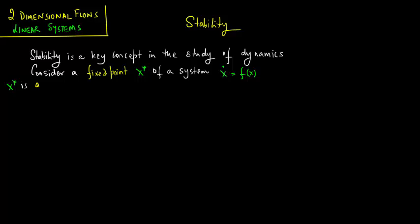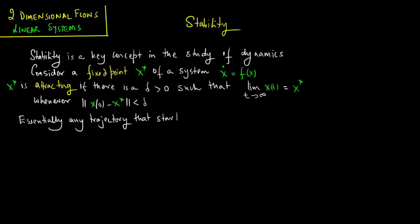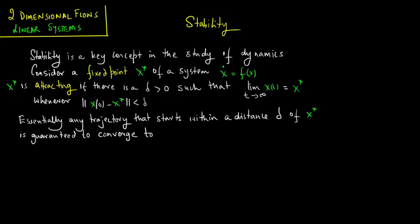x star is attracting if there is a delta greater than 0 such that the limit as t tends to infinity of x of t equals x star, whenever the distance between x naught and x star is less than delta. Essentially, any trajectory that starts within a distance delta of x star is guaranteed to converge to x star.